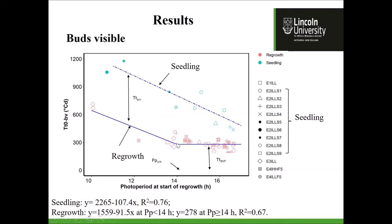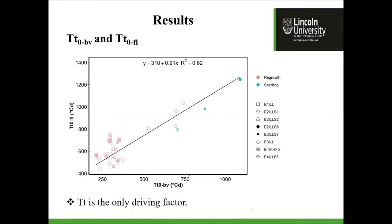For the regrowth crop, after photoperiod reaches 14 hours, the thermal time to bud visible stage doesn't change. We think around 14 hours is the critical photoperiod for the crop to reach bud visible stage. From bud visible stage to flowering, there is a linear relationship between thermal time to flowering and thermal time to bud visible stage. The slope is 0.91, which is no different from one, meaning thermal time — or temperature — is the only driving factor from bud visible to flowering. The simulation results show good overall agreement for bud visible and flowering stages for both seedling and regrowth crops.